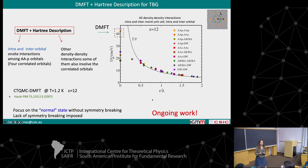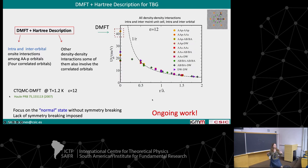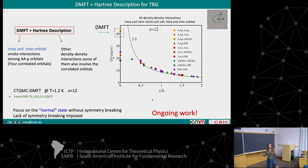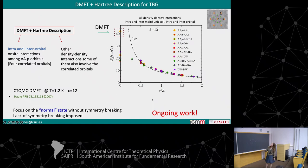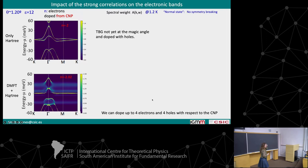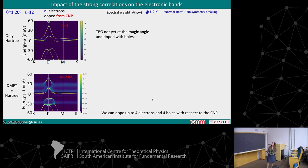Even if the other orbitals are less correlated, I cannot throw away all their interactions. What I'm going to do is introduce the interactions involving the less-correlated orbitals at the Hartree level, and treat the interactions involving the AAP system at the DMFT level. There are both intra- and interorbital interactions in these AAP orbitals, and we are going to do DMFT — specifically, CTQMC-based DMFT. I'm going to focus on the normal state, which means I'm making these four orbitals equivalent and not allowing them to be different. Some of the results I'm going to present are really recent; this is ongoing and unfinished work.